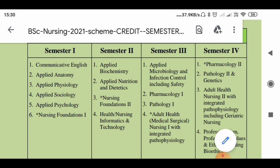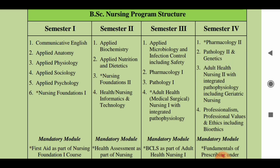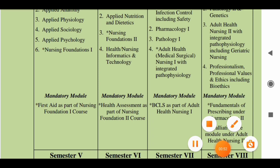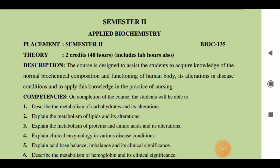Dear students, today we are going to discuss the subjects in the second semester of BSc Nursing. You have a total of four subjects: first is Applied Biochemistry, second is Applied Nutrition and Dietetics, third is Nursing Foundations 2, and the fourth is Health or Nursing Informatics and Technology. There is also a mandatory module — Health Assessment — which you have to complete as part of Nursing Foundations 2.